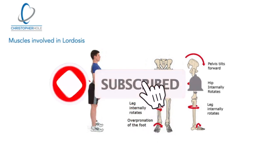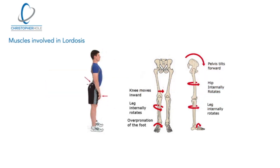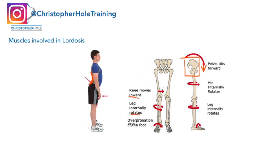In this tutorial we're going to be looking at muscles involved in lordosis and I've broken it up into three parts. Part one is the exaggerated curve of the spine. Part two is the anterior pelvic tilt, with the front of the pelvis being pulled down. The final part is the knee moving inward and the internal rotation of the leg.